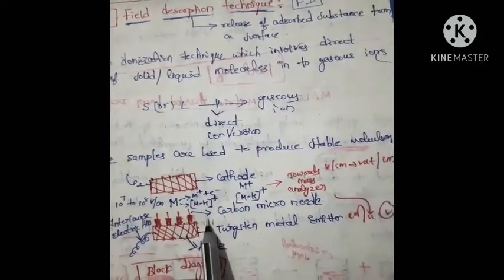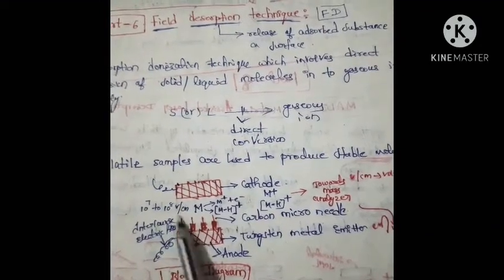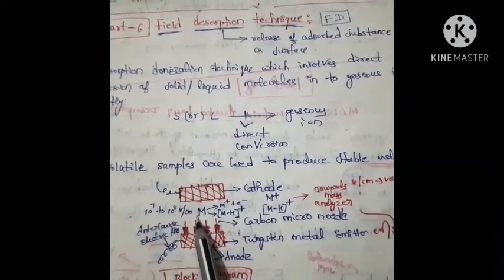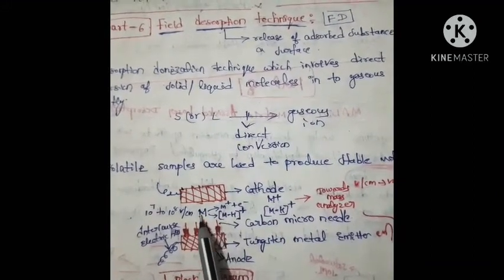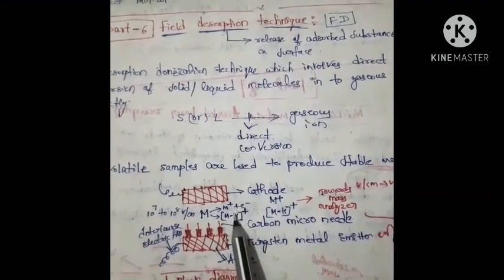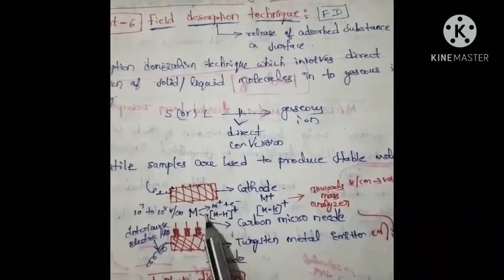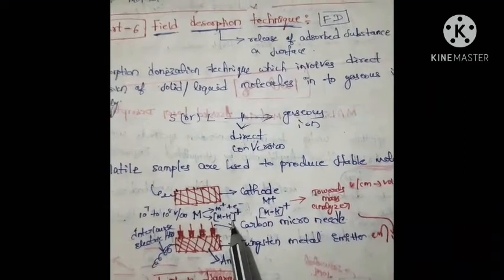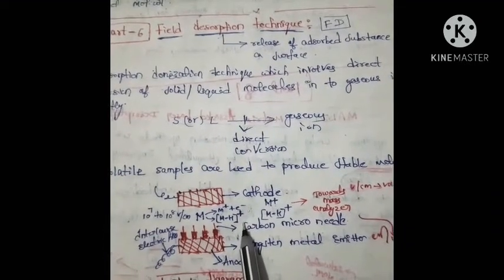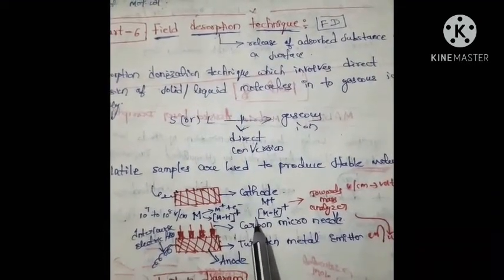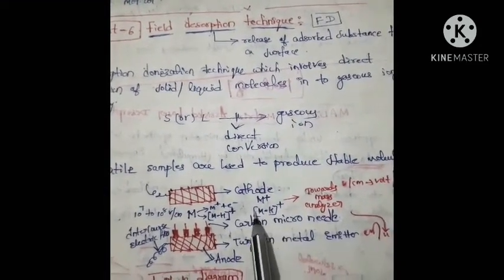On the tungsten metal emitter there are carbon micro needles. Here 10^7 to 10^8 needles are used. This is the molecular ion. From our previous class we discussed methods like proton transfer and hydride transfer — here M+H⁺ comes under proton transfer, and this is said to be a quasi molecular ion.